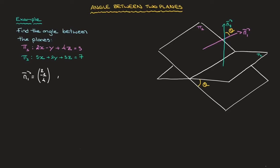I do the same for the second plane. n₂ will equal (5, 2, 3), which are the x, y, and z coefficients of the second plane.